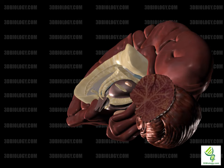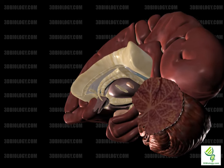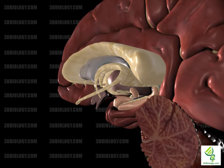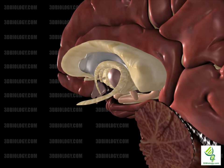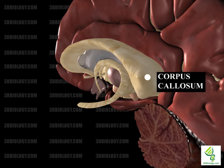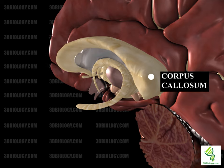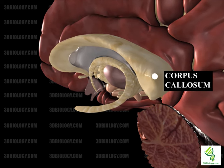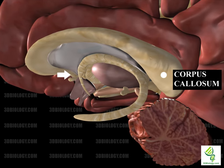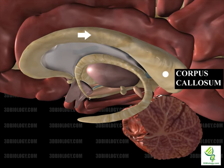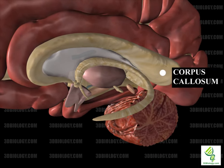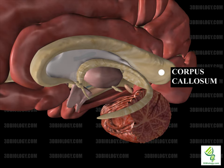The corpus callosum, which translates into 'tough body,' is a thick nerve tract that connects the two cerebral hemispheres. It can be found below the cerebral cortex, crossing the midline. The corpus callosum is the largest white matter body with several hundred million axons. It can be divided into the rostrum, the genu, the body, and the splenium. The corpus callosum allows for communication between the two hemispheres of the cerebrum.